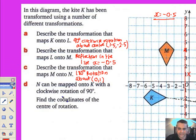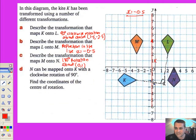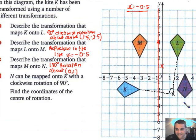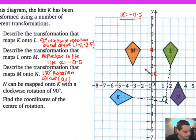Finally it says N can be mapped onto K. Find the coordinates of the center of rotation. It's really tricky. It's clearly a rotation of 90 degrees going clockwise. The center is around here somewhere. The answer book says (-1,2).